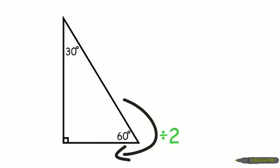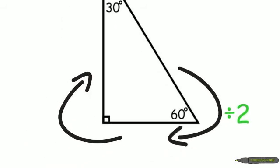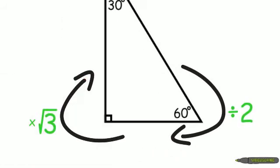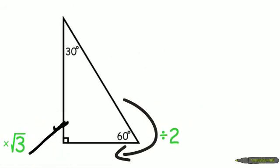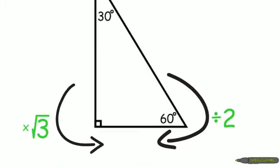Same thing for the long leg, except this time you'd multiply by radical 3. And then if you want to go from the long leg back to the short leg, instead of multiplying, you divide by radical 3.